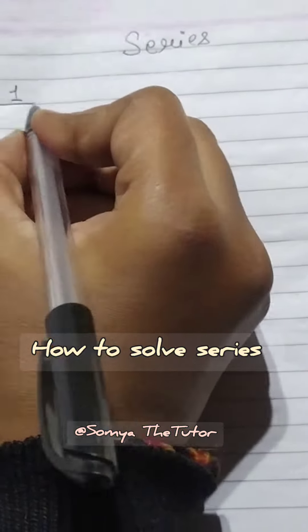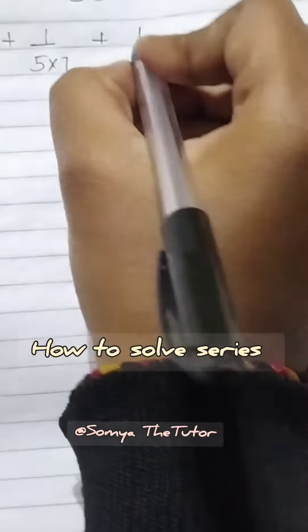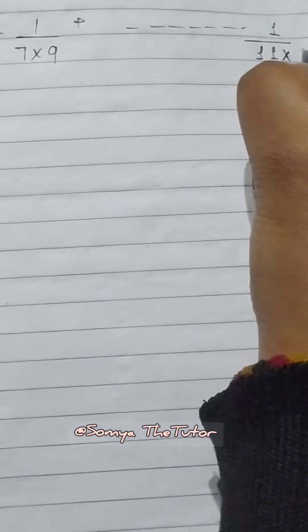First portion is 1 upon 3 multiply 5 plus 1 upon 5 multiply 7 plus 1 upon 7 multiply 9 plus 1 upon 11 multiply 13.